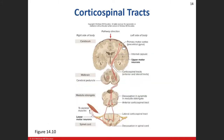Here you can see the upper motor neuron traveling down through the internal capsule, descending into the brainstem through the cerebral peduncles in the midbrain. Some fibers will cross in the medulla oblongata and some will not. Those that cross wind up in the lateral corticospinal tract — cortical meaning cerebral cortex, spinal telling us where it's going. The lateral corticospinal tract decussates — crosses over — from the left side of the body to the right side of the spinal cord, then synapses onto the lower motor neuron.